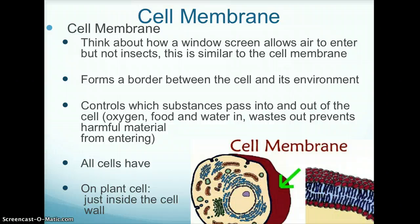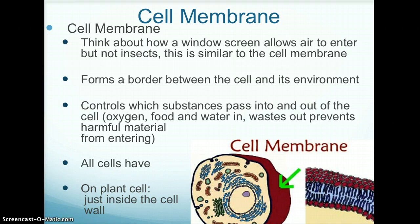A window screen allows air to enter, but not insects. This is similar to the cell membrane because the cell membrane forms a border between the cell and its environment. The cell membrane controls which substances can pass into the cell, like oxygen, food, and water, and keeps harmful things from entering the cell.